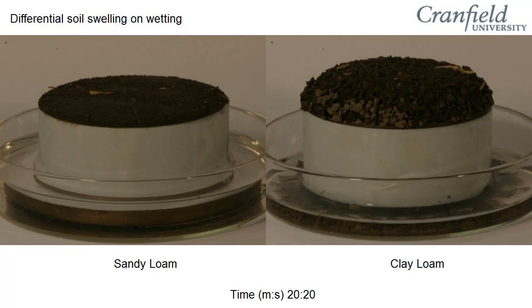The process of shrinkage is this in reverse. During evaporation, water is removed from the lattice and the minerals shrink in volume. This causes the soil to crack in dry conditions.